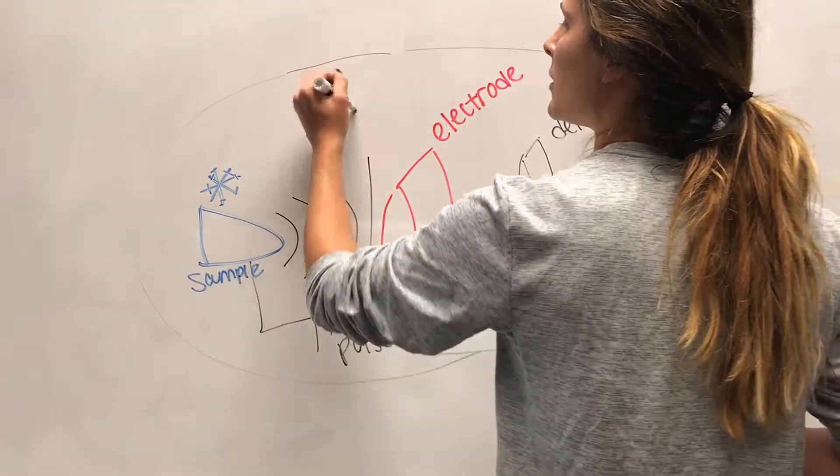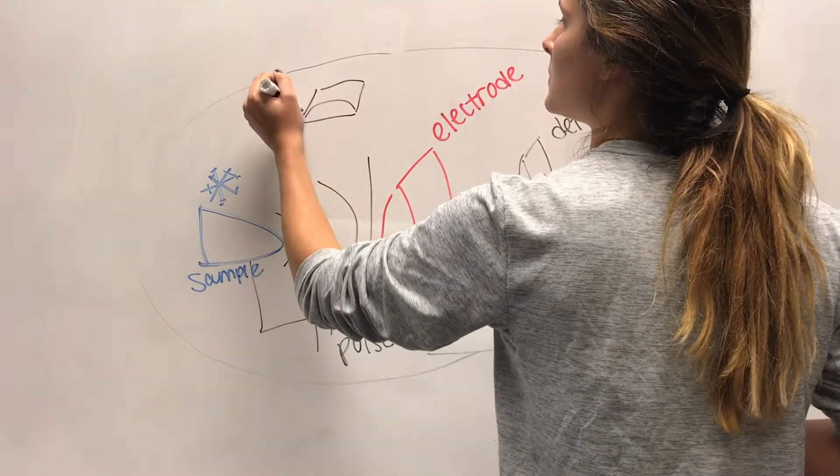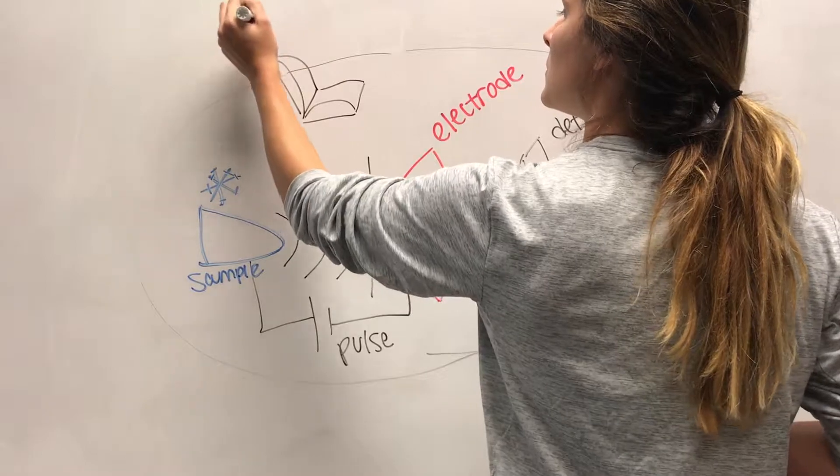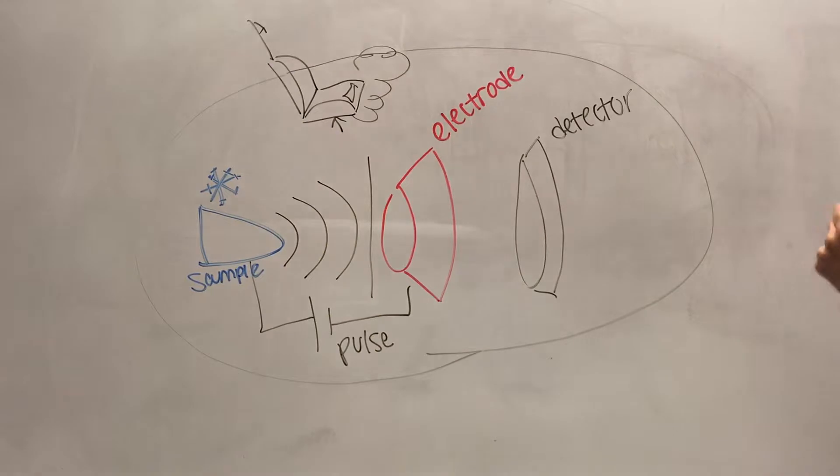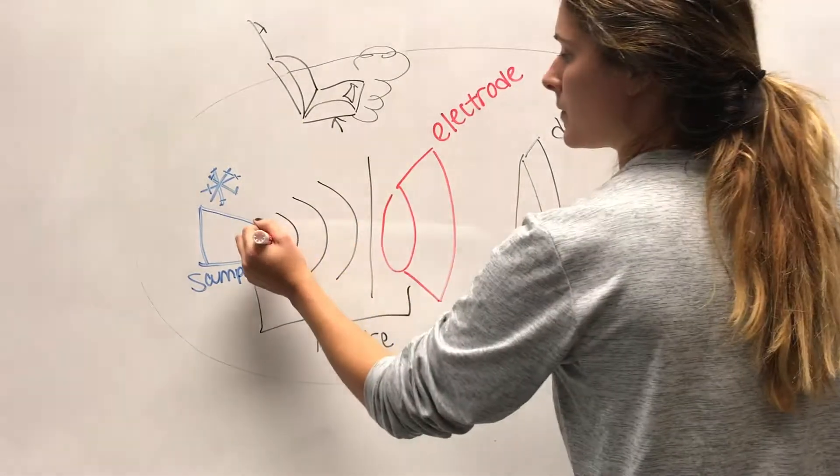The tip is placed in an ultra-high vacuum chamber so electrons have an unimpeded pathway to the detector. A pulse of extremely high voltage, around 3 to 15 kilovolts, is then applied to the sample so the ions feel a very strong electric field at the tip.